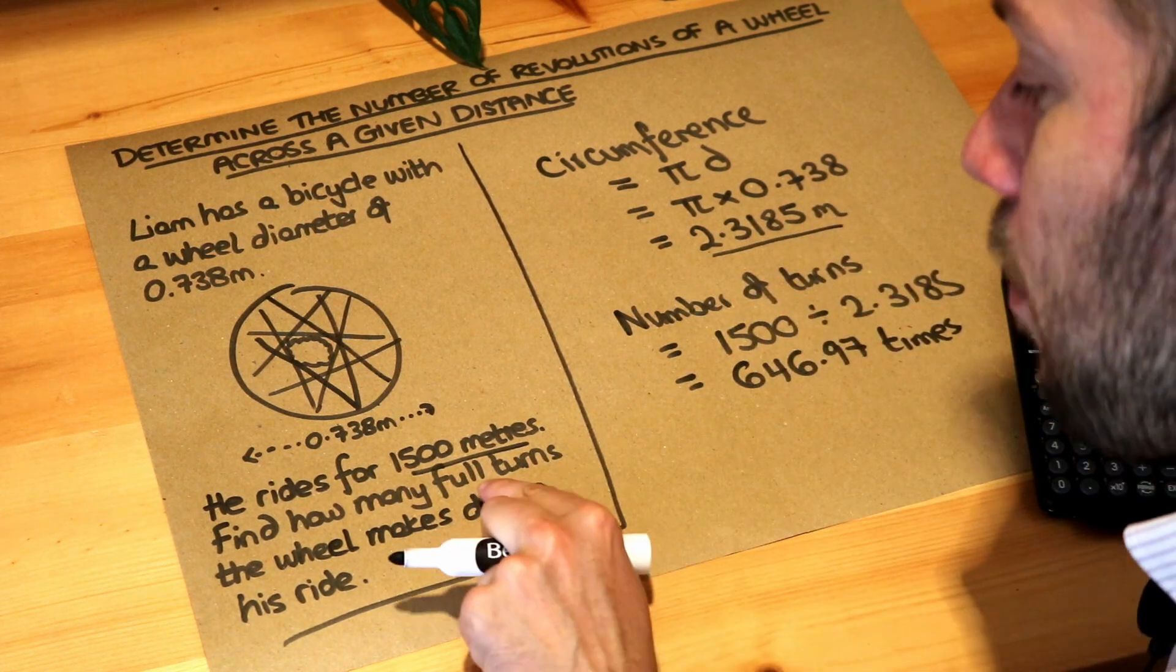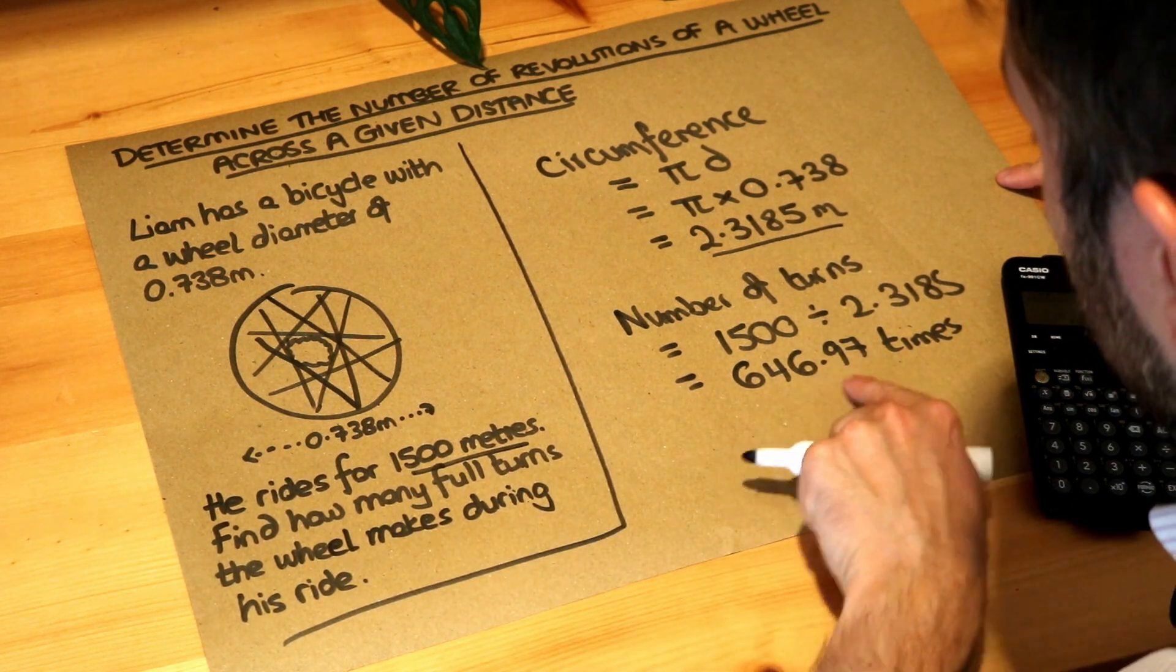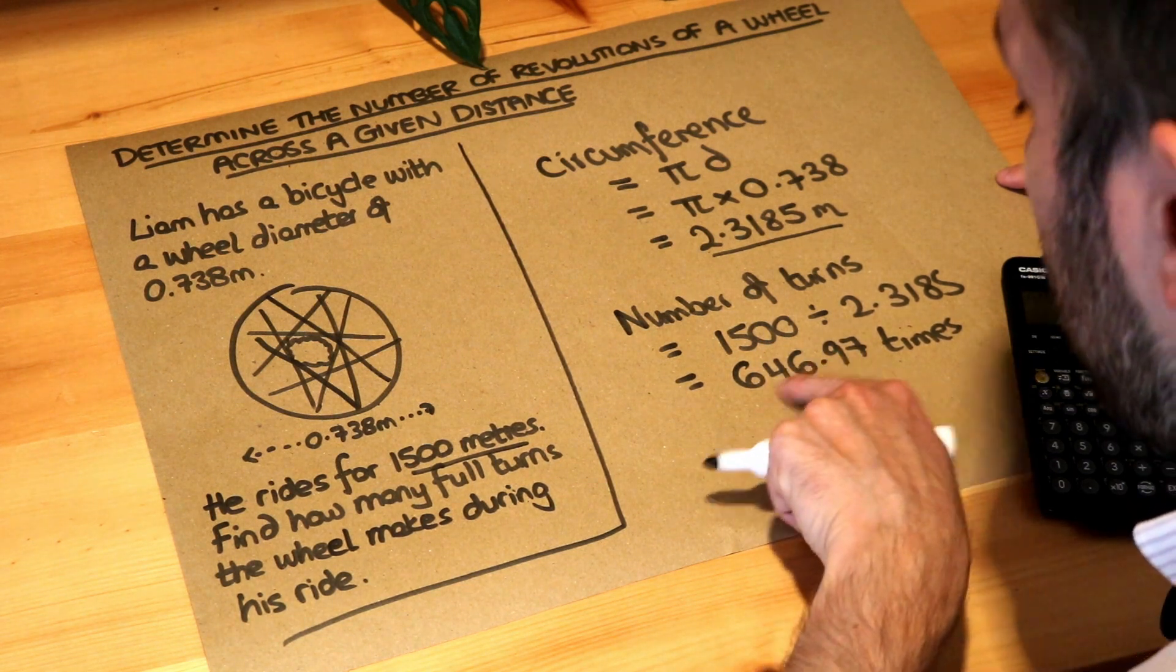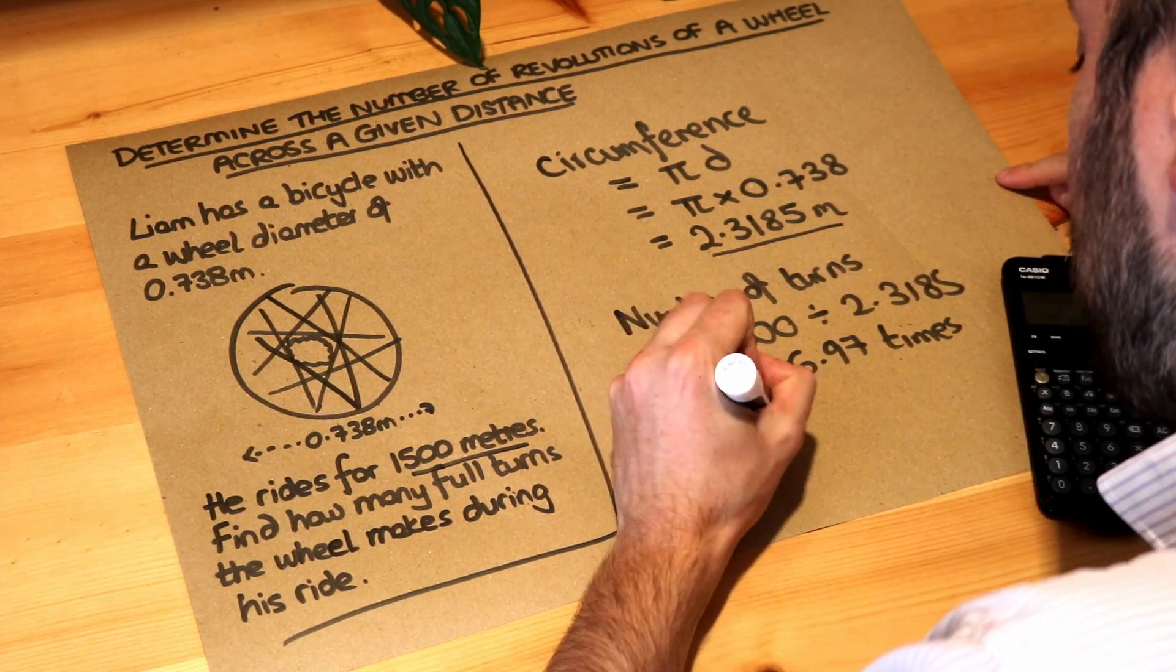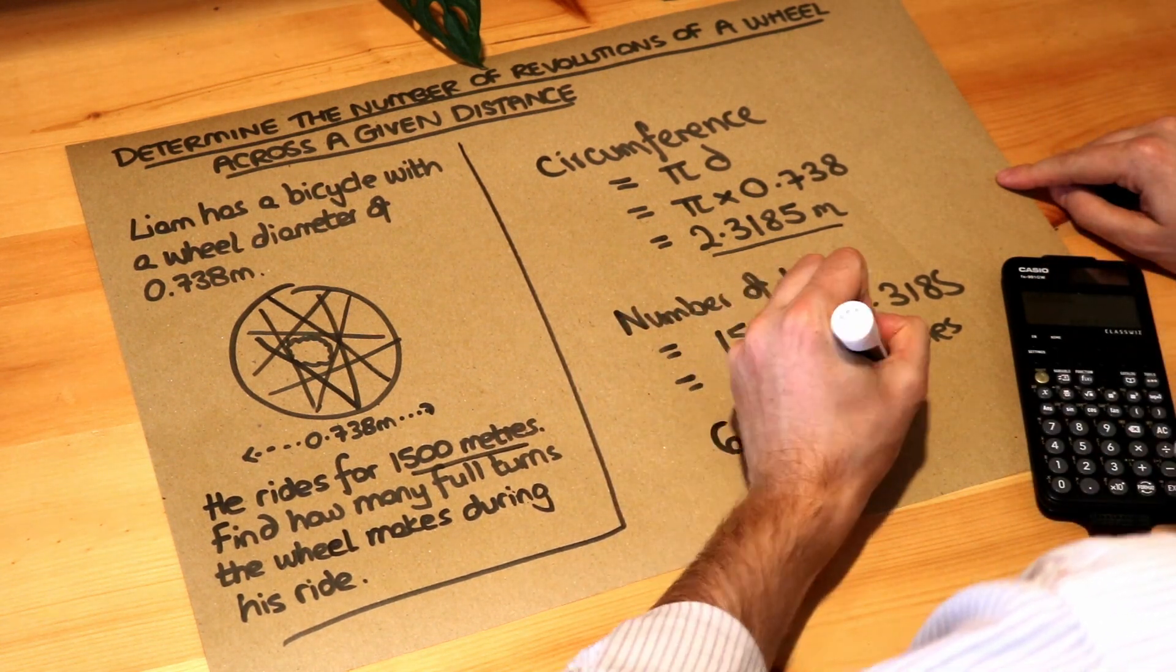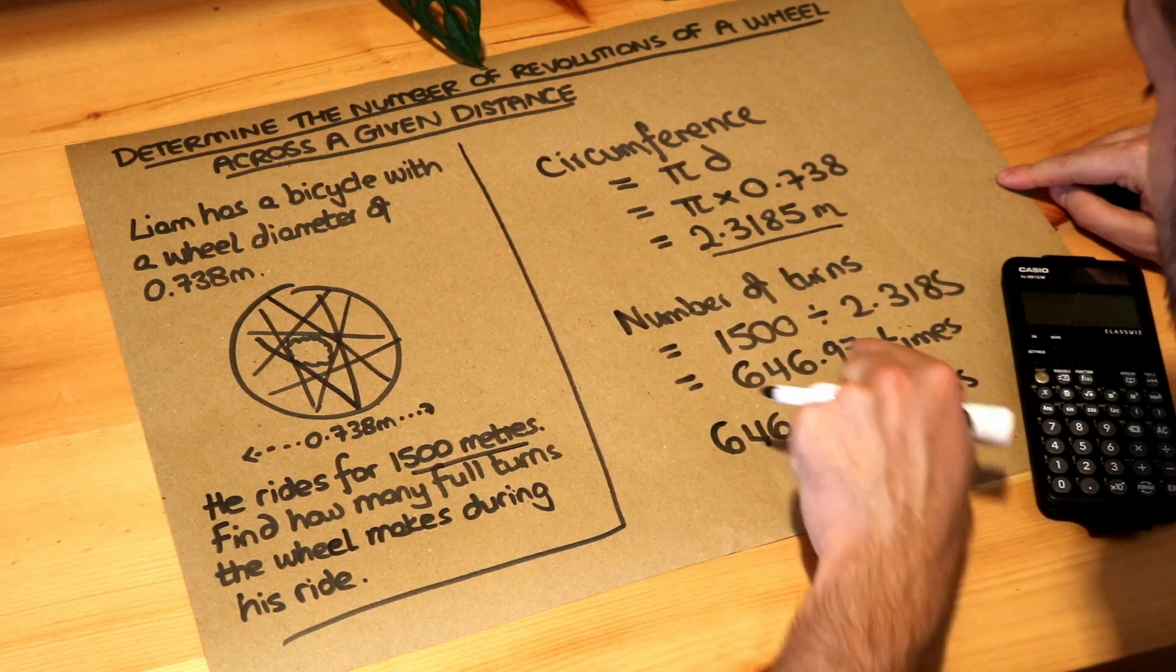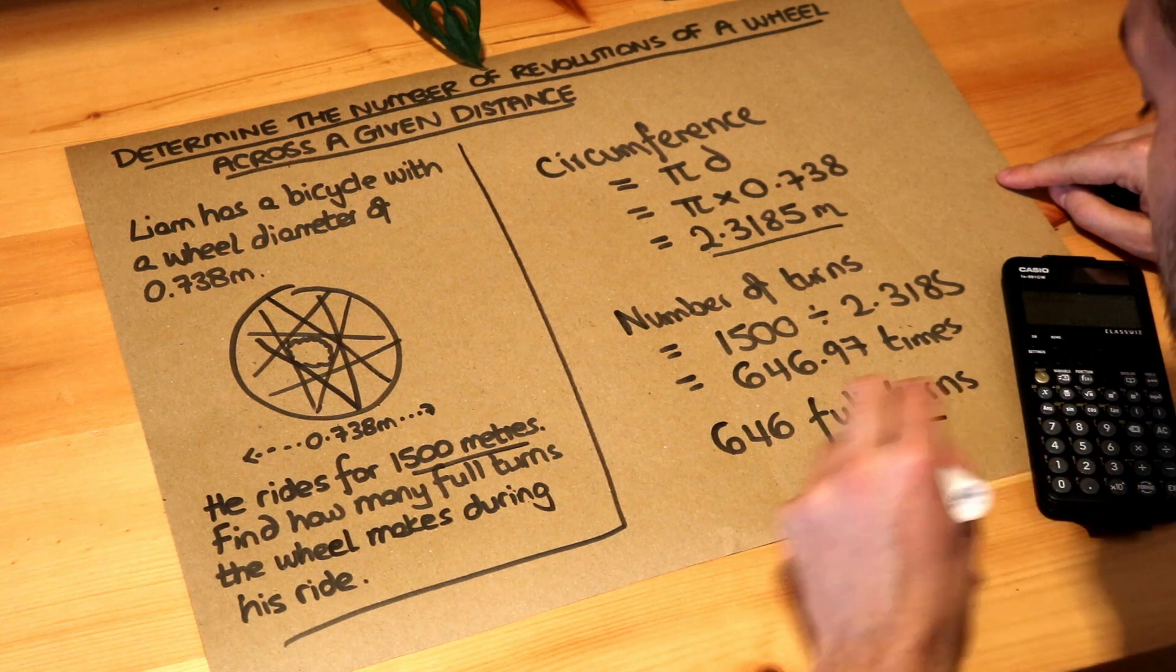And it's asking for how many full turns. Now if you think about it, even though this rounds to 647 to the nearest whole, it hasn't actually got as far as a 647th turn. So there's 646 full turns. We have to round down if we only want the number of full turns. Because 0.97 of a turn doesn't count as a full turn. And that's the final answer.